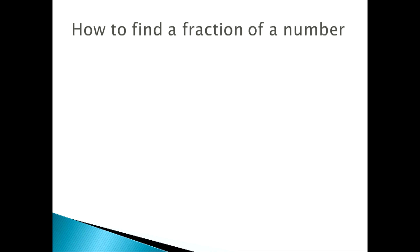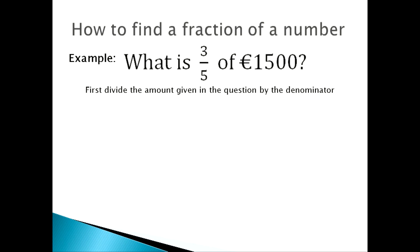How to find a fraction of a number - example: What is three-fifths of 1500 euros? First, what you need to do is divide the amount given in the question by the denominator. In case you didn't know, the denominator is the bottom number of the fraction, so you would do 1500 euros divided by 5 to get 300 euros.